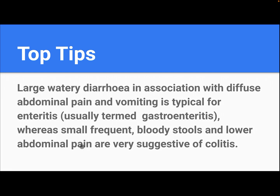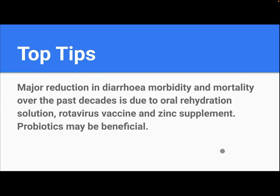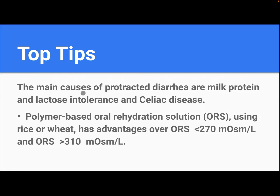Large watery diarrhea associated with diffuse abdominal pain and vomiting is typical for enteritis, usually termed gastroenteritis, whereas small, frequent, bloody stools and lower abdominal pain are very suggestive of colitis. Major reduction in diarrhea morbidity and mortality over the past decade is due to oral rehydration solution, rotavirus vaccine, zinc supplementation, and probiotics, which may be beneficial.